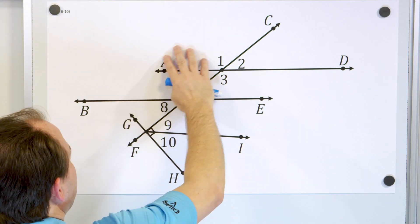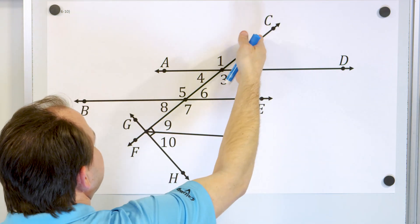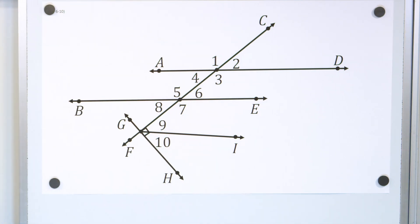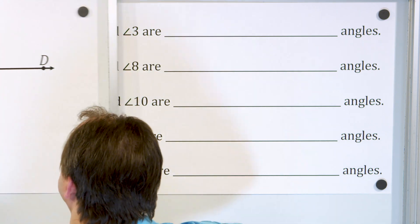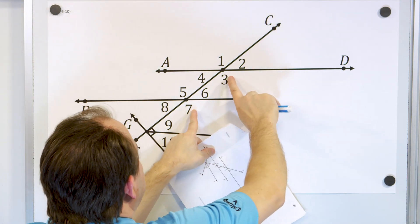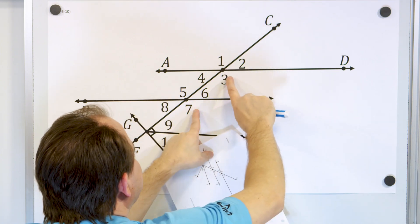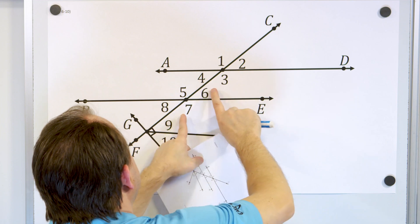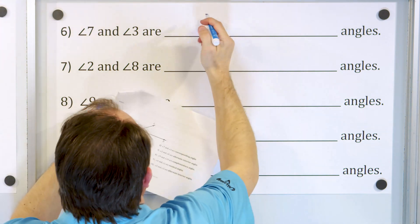Let's look at the next figure — it's really complex, with two parallel lines and a transversal crossing them, plus another part of the figure with lots of angles. The first question asks: angle seven and angle three are what kind of angles? They're not alternate anything because they're on the same side — they're actually in the same locations. We call these corresponding angles, just like other pairs in corresponding positions.